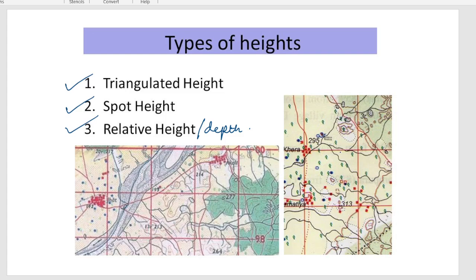Next we have spot height. In this given topographical map you can see this is a triangulated height. Now here you can also get to see one dot is given in black where 295 is written. This indicates the spot height of the place is 295 meters. So here the value of triangulated height was 277 meters from mean sea level.